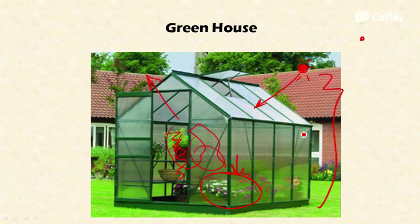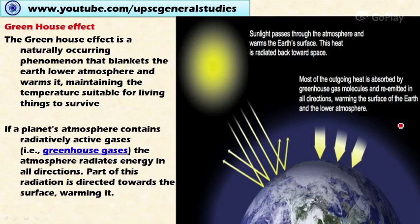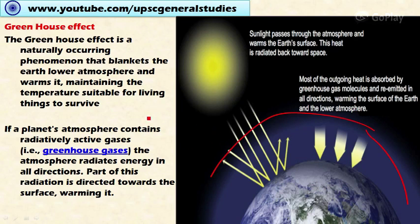This is the greenhouse effect, and it happens on a larger scale on our planet Earth. The greenhouse effect is a naturally occurring phenomenon that blankets the Earth's lower atmosphere and warms it, maintaining temperatures suitable for living things to survive.